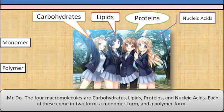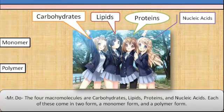The four macromolecules are carbohydrates, lipids, proteins, and nucleic acids. Each of these comes in a monomer form and a polymer form.